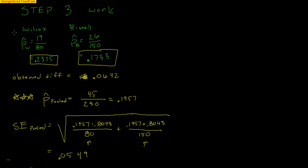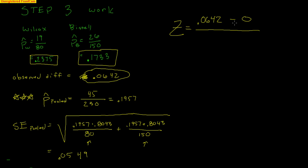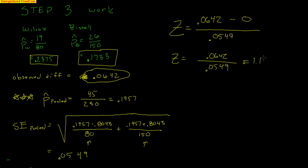Now I find the z-score: (0.0642 − 0) / 0.0549. I subtract zero because the null assumes no difference, so I'm measuring how far the observed difference is from zero. Dividing 0.0642 by 0.0549 gives z = 1.1694.